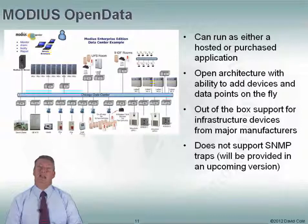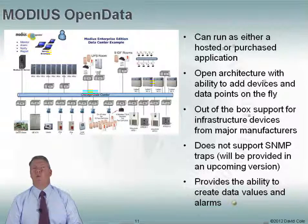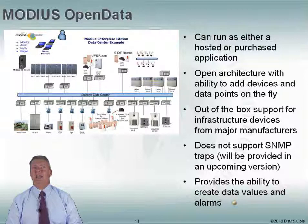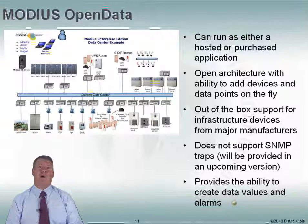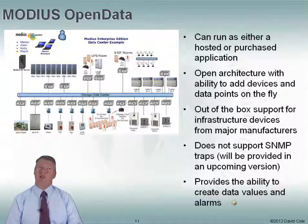They do support SNMP gets and sets. One of the things that's really nice about this product is the ability to create computed data values and alarms. For example, you might have a row of racks and want to create a variable for how much power is being used by all the racks in that row. You can create a data value called 'row one power' that adds those eight values together — and you can do that on the fly. You can also create alarms. For instance, if you're monitoring two CRAC units and one is humidifying while the other is dehumidifying, that's demand fighting. You can generate an alarm for that condition using Modius Open Data.